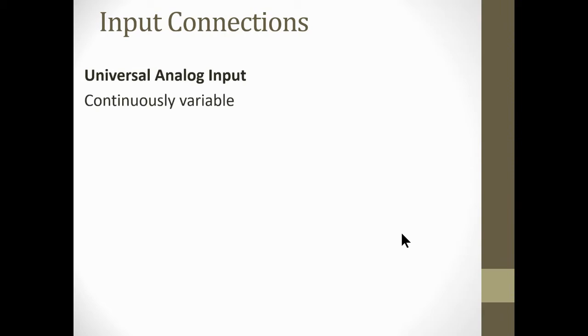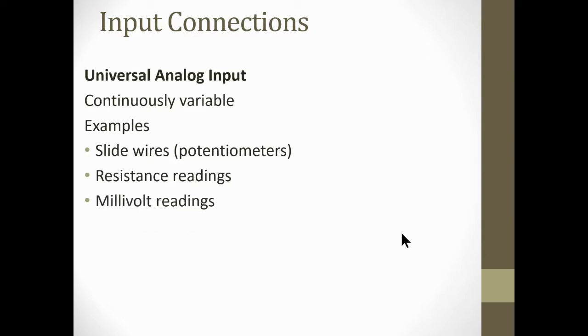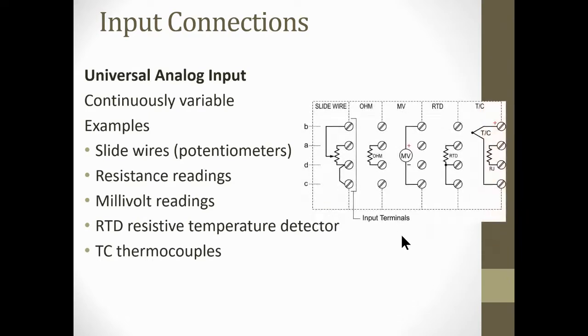Universal analog input, as we know, is continuously variable. Slide wires and potentiometers, those pots we call it, that's an example of an input connection. Resistance readings, so if we're looking at thermocouples and things like that, millivolt readings, RTD resistive temperature detectors, thermocouples—these are all examples of input connections. It shows you on the back here, when we look at this, it's a slide wire, so basically a potentiometer. On this one, this one's ohmic value, so it could be an RTD. Millivolt value, we've got RTDs here and thermocouples. So these are basically the inputs, universal inputs, that are on the back of these controllers.